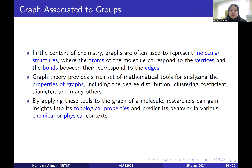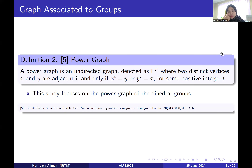In the context of chemistry, graphs are often used to represent molecular structures where atoms correspond to vertices and the bonds between them correspond to edges. This is how people convert molecular structures from chemistry into graph theory. Graph theory provides a rich set of mathematical tools for analyzing graph properties, including degree distribution, clustering coefficients, diameter, and many others. By applying these tools to the molecular graph, researchers can gain insights into its topological properties and predict its behavior in various chemical or physical contexts.